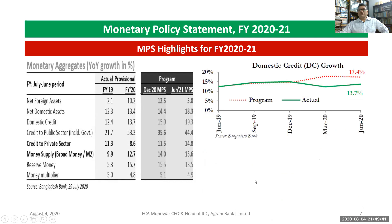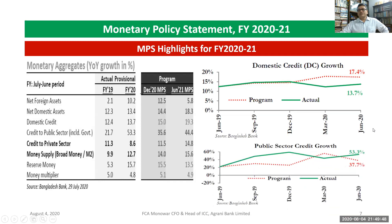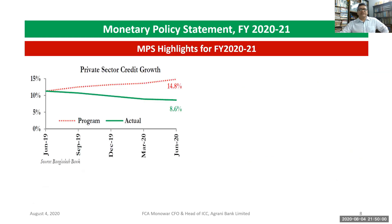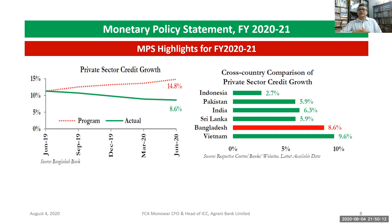Domestic credit actual was 13.7% in the previous year. Public sector credit growth was 53.3% actual last year. Private sector credit actual growth was 8.6% in June 2020. For cross-country comparison of private sector credit growth: Indonesia 2.7%, Bangladesh 8.6%, Vietnam 9.6%, India 6.3%, Sri Lanka 5.9%, and Pakistan 5.9%.